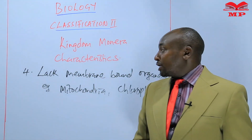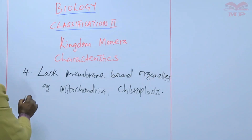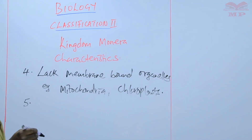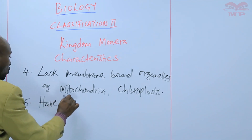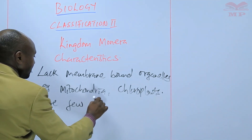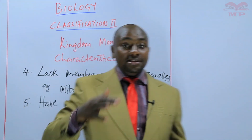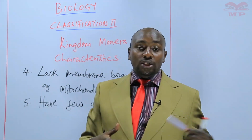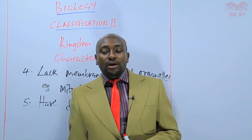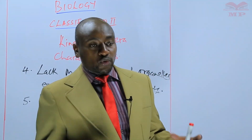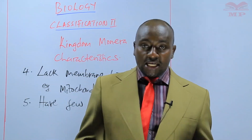Number five: the other characteristic is that the members here have few organelles. These few organelles are as per what we saw in our previous lesson — the cell wall, the nuclear material, basically that. So they are not as many as other cells that we have in our bodies.